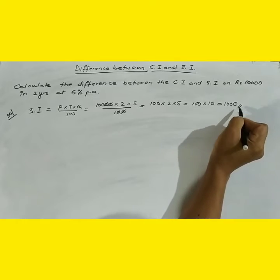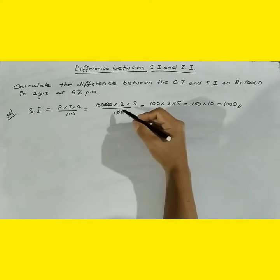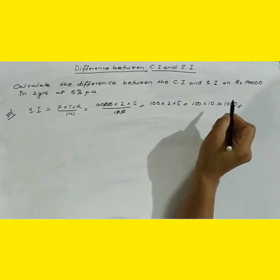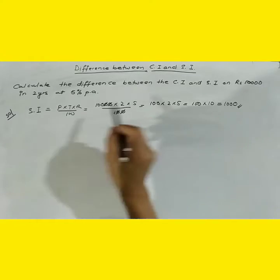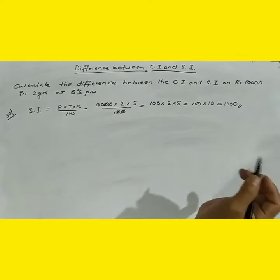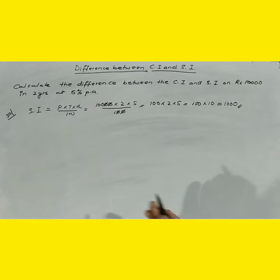So equals to 1,000. So the simple interest for 2 years on rupees 10,000 at 5% is 1,000. That is the simple interest.